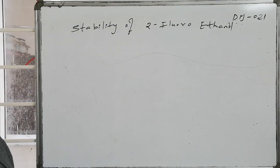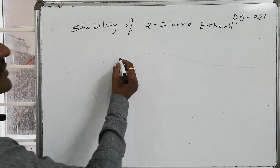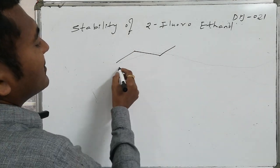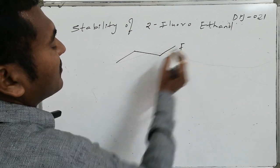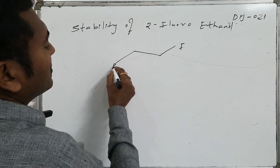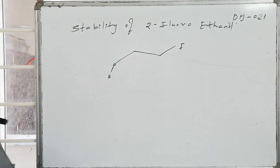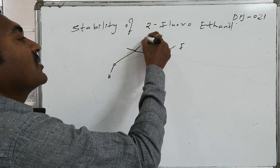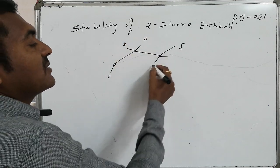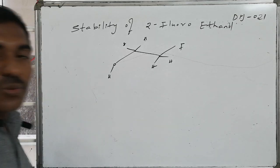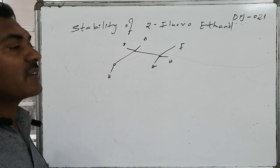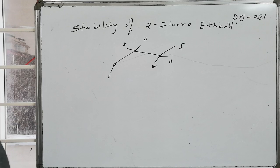The stability order of 2-fluoroethanol related main conformations. 2-fluoroethanol has fluorine at the second position and OH at the first position, with the remaining positions being hydrogen atoms. These two are hydrogen atoms and these two are also hydrogen atoms — that is 2-fluoroethanol.